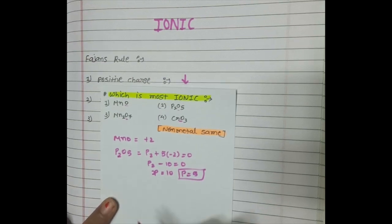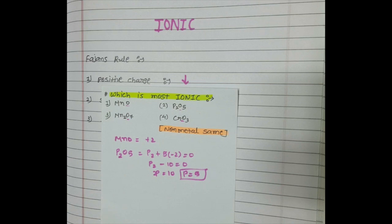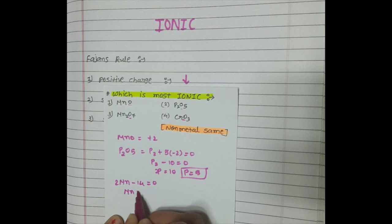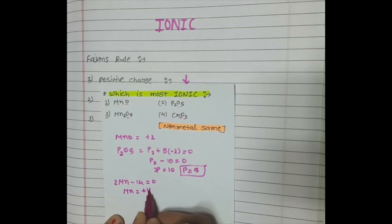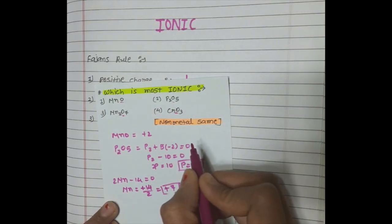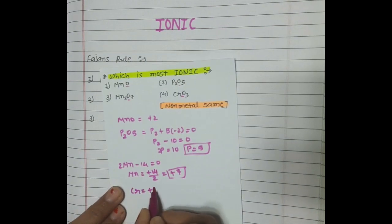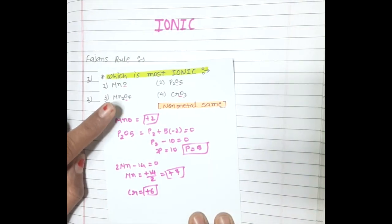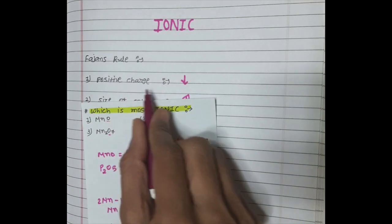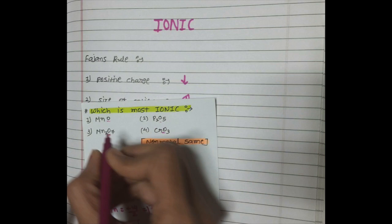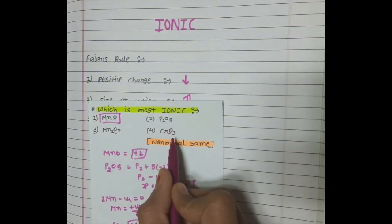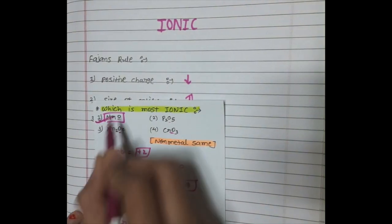For Mn₂O₇: oxygen is −2 and there are 7 oxygens, so that is −14. With 2 Mn present: 2Mn − 14 = 0, so Mn = +14/2 = +7. For CrO₃: oxygen is −2 multiplied by 3 = −6, so Cr is +6. Summary: MnO is +2, Mn₂O₇ is +7, P₂O₅ is +5, and CrO₃ is +6. The ionic compound depends on positive charge being less. The least positive charge is MnO at +2, so MnO is the most ionic compound.